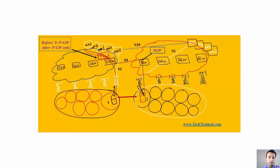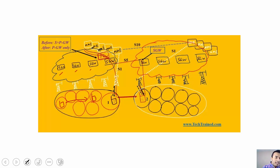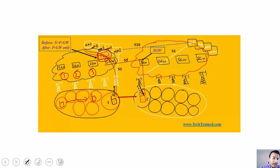Looking at this diagram, you can observe there are a number of SGWs. As a user moves from one base station to another, the UE performs a handover, and in addition to that handover, the SGW may also change. For example, this is SGW number one, SGW number two, SGW number three. No matter if you are moving from one base station to another and your SGW is changing, the PGW remains the same across the entire area. SGW provides mobility, meaning your IP address will remain the same as long as your PGW remains the same.